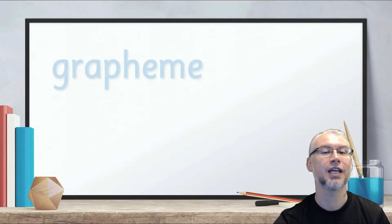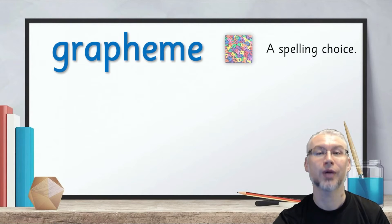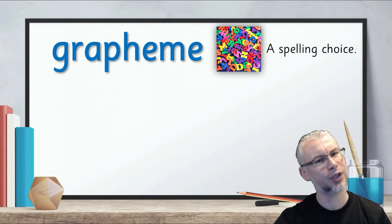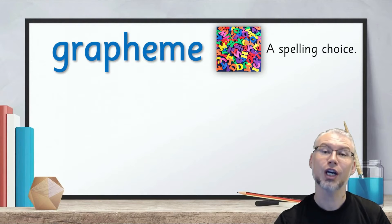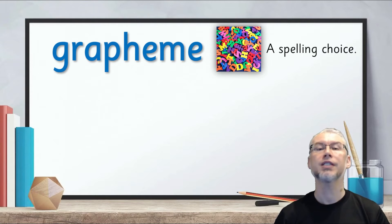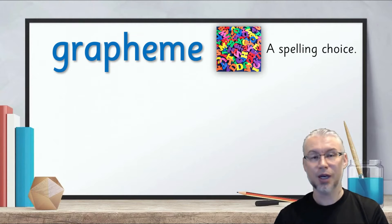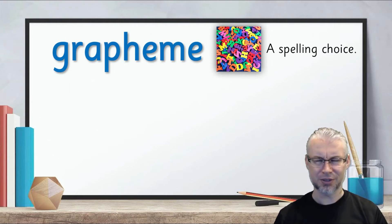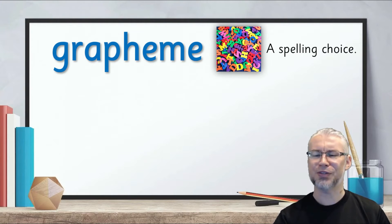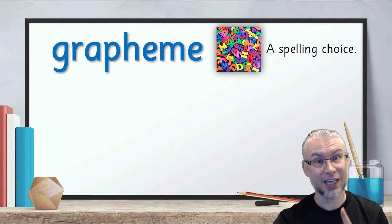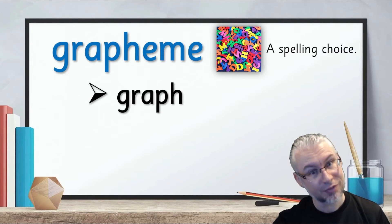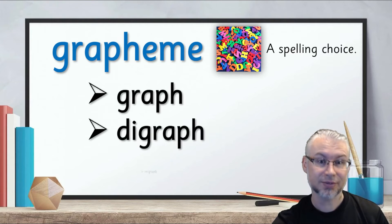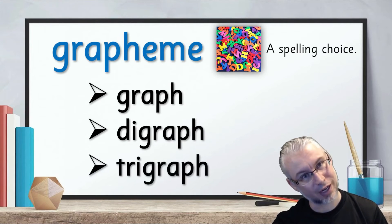Right, let's move on to today's question. Today we're looking at different kinds of grapheme. A grapheme is a spelling choice, but there are different kinds of grapheme. Today we're going to be looking at these three: a graph, a digraph, and a trigraph.